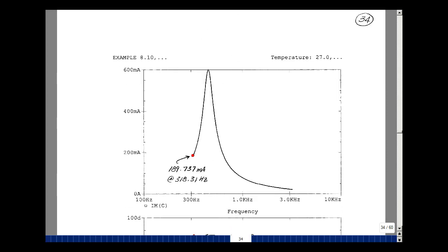Next, let's do the capacitor current. So the magnitude of the current in the capacitor C, 189.737 milliamps at that frequency of 318.31 hertz. And that's very close to what we hand calculated of 189.71 milliamps.